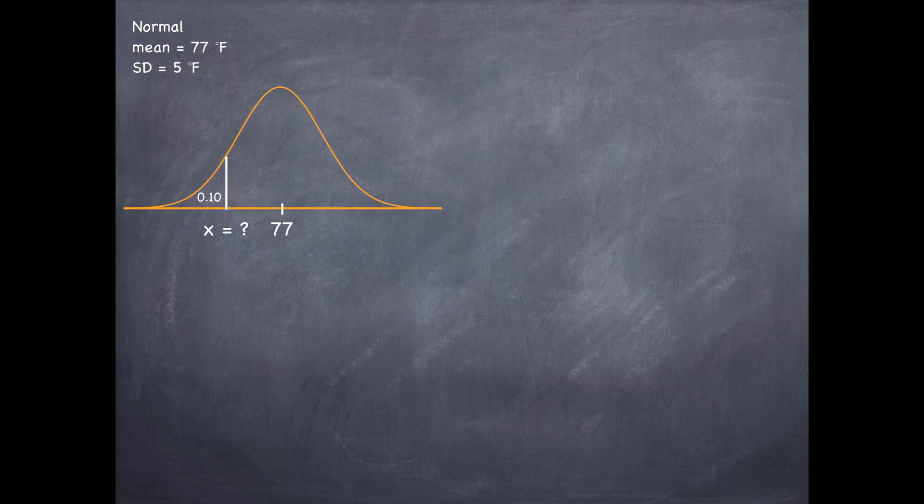We're working with a normal distribution. We have some percentiles. It makes sense to think about z-scores. Usually we calculate a z-score as an observation minus a mean divided by a standard deviation. And then we can use that z-score to go to the normal probability table to obtain a percentile.